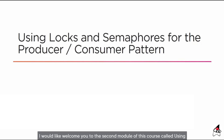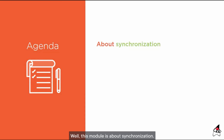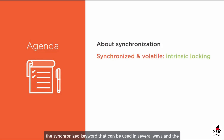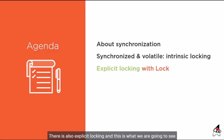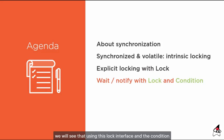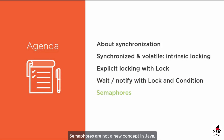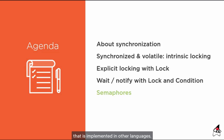Welcome to the second module of this course, called Using Locks and Semaphores for the Producer-Consumer Pattern. This module is about synchronization. In Java, we have two ways of synchronizing: the synchronized keyword and the volatile keyword, both related to intrinsic locking. There is also explicit locking, based on the lock interface. We will also see the condition interface, the wait-notify pattern, and finally, semaphores — a concept that comes from operating systems and is implemented in the Java flavor.